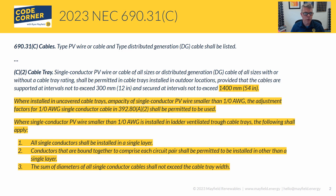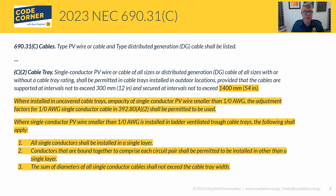690.31(C) talks about PV wire and cable shall be listed. Under C2, which is what I want to focus on, is about cable tray. That first charging statement under cable tray didn't really change — they just matched the style in terms of how they showed the units. The first part says we can use small conductors, PV wire, and DG cable of all sizes in cable tray. This was an important addition back in the 2017 version — the first time you could use small conductors in cable trays on rooftops.